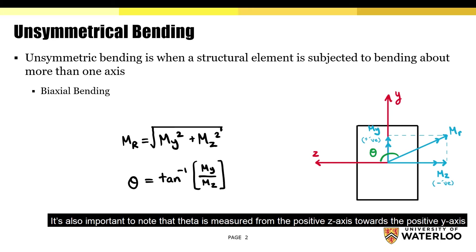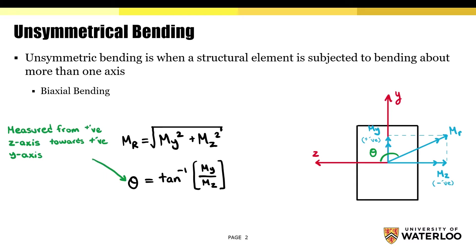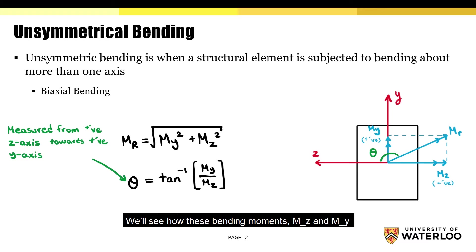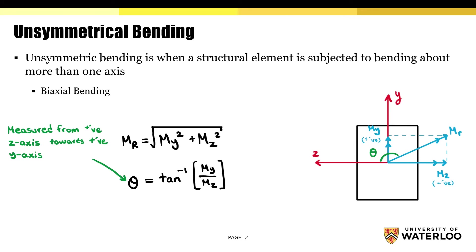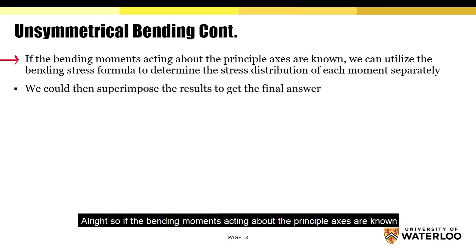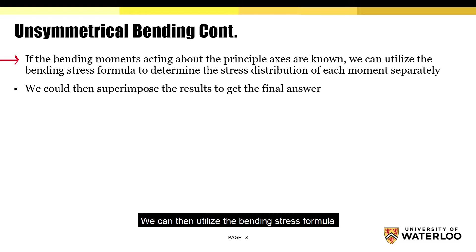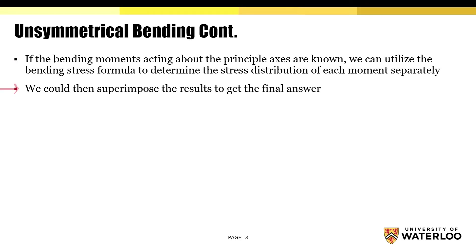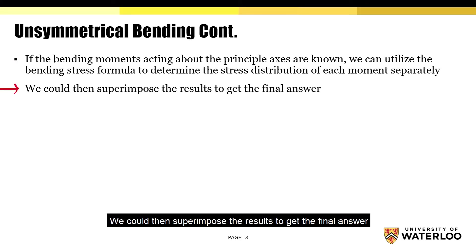It's also important to note that theta is measured from the positive z axis towards the positive y axis. On the following slide, we'll see how these bending moments Mz and My can be used to determine the stress distribution. So if the bending moments acting about the principal axes are known, we could utilize the bending stress formula to solve for the stress distribution for each moment separately. We could then superimpose the results to get the final answer.